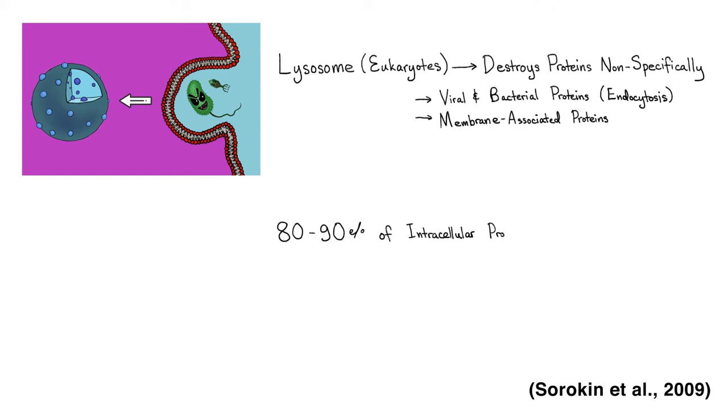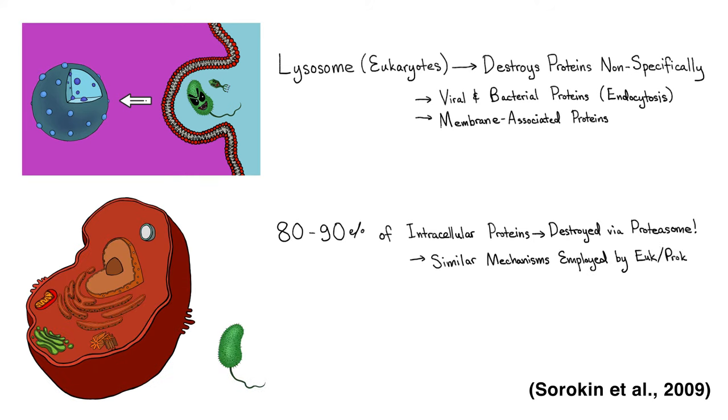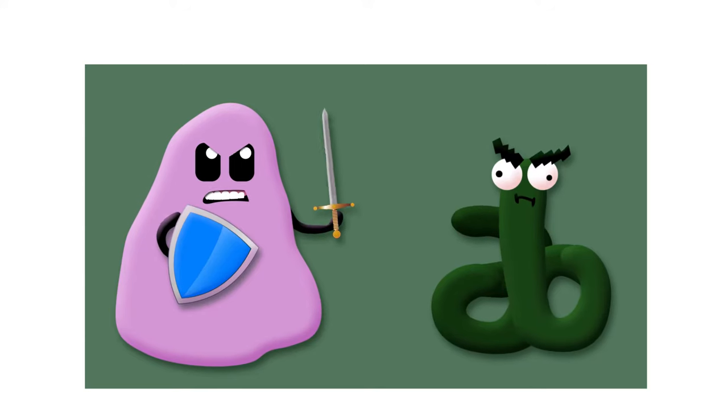However, 80-90% of intracellular proteins are destroyed via the proteasome. Similar mechanisms are employed by eukaryotes and prokaryotes, but in this video we will focus on the eukaryote side of things.